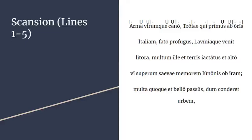Looking at the next line, we see a macron and it always starts with a dash anyway. 'Italiam' — note that IA combinations can be a little funky; they don't always get elided and can be counted separately, as they will here. Identifying the long sounds, 'Italiam fa' can work as dactyl into spondee. Then 'toh' — the double consonant PR means this is long.